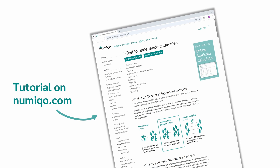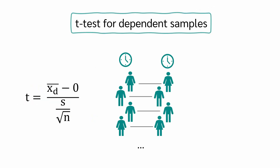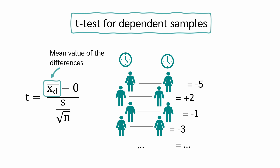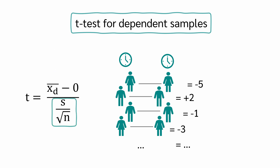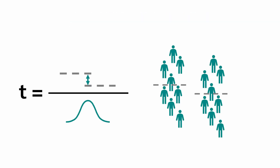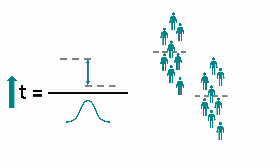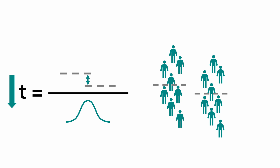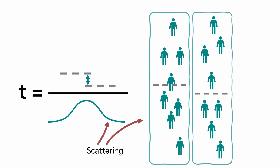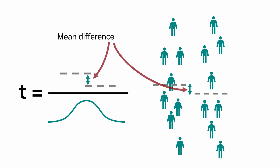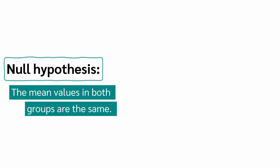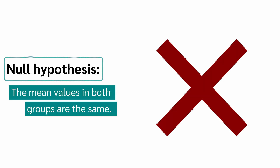Read more about this in our tutorial on numico.com. In a paired-samples t-test, we calculate the difference between the paired values and calculate the mean from it. The standard error is then the same as for a one-sample t-test. No matter which t-test we calculate, the t-value will be greater if we have a greater difference between the means, and smaller if the difference is smaller. Further, the t-value becomes smaller when we have a larger dispersion of the mean — so the more scattered the data, the less meaningful a given mean difference is.